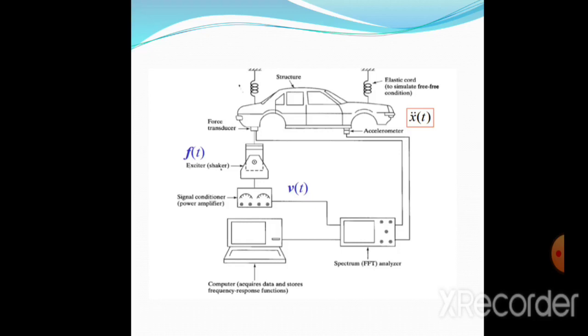An accelerometer is attached to the chassis to measure the oscillation amplitude for acceleration. Oscillation is given by an exciter or shaker, the external force Ft. It goes to the spectrum FFT analyzer where it is measured, then sent to the signal conditioner or power amplifier, and analyzed at the computer where data is stored and frequency response functions are acquired.